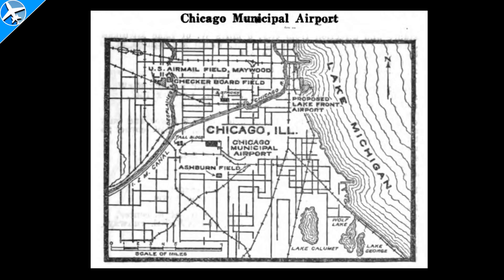If a pilot wanted more information than what was on the back of the aeronautical chart, they could go to the airway bulletin. This airway bulletin is from 1927. You can see where Chicago Municipal Airport is. Looking to the northeast, the proposed lakefront airport would later become Chicago Meigs, which at this time was a landfill and would not be officially opened until December of 1948.